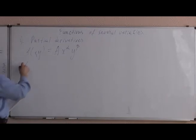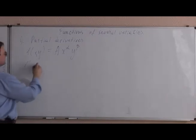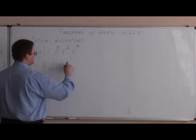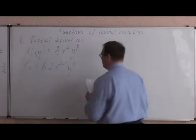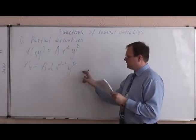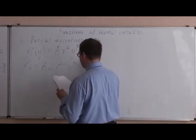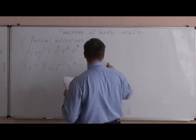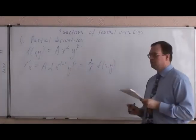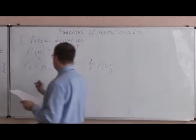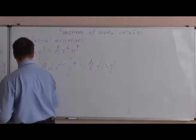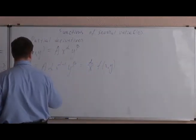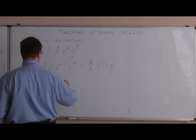So you can see that f prime with respect to x is just alpha x alpha minus 1 y beta. But if you think about this, you will see that this is nothing more than alpha over x, f of x and y. And the same about the second part, which is going to be beta over y, f of x and y.